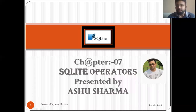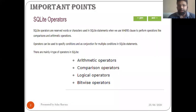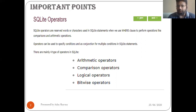Good evening everyone, myself Ashu Sharma. I welcome you all in this series on SQLite operators. Today we will see some of the operators used in SQLite. SQLite operators are reserved words or characters used in SQLite statements when we use their clause to perform operations like comparisons and arithmetic operations. Operators can be used to specify conditions and as a conjunction for multiple conditions in SQLite statements. Operators are very important, as we have learned in previous languages where we use operators extensively.